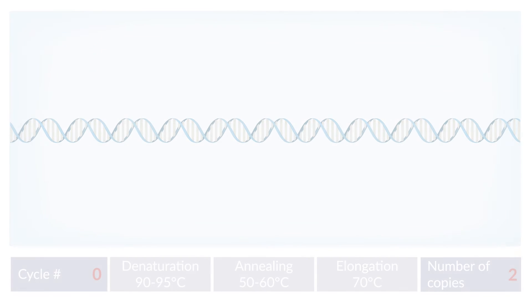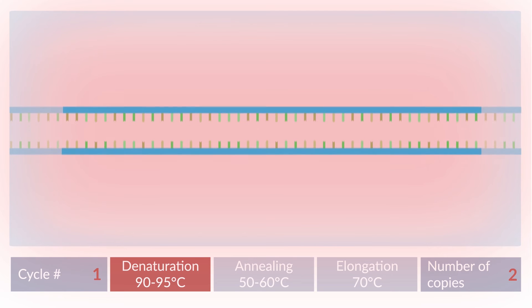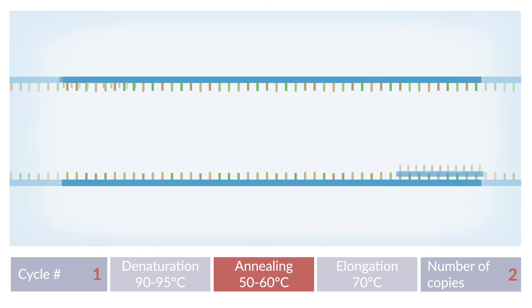The PCR now proceeds as follows. The temperature is increased to approximately 90 to 95 degrees Celsius to denature the DNA and separate the strands. Next, the temperature is decreased to 50 to 60 degrees Celsius for the primers to attach to the complementary DNA sequences. This process is called annealing.